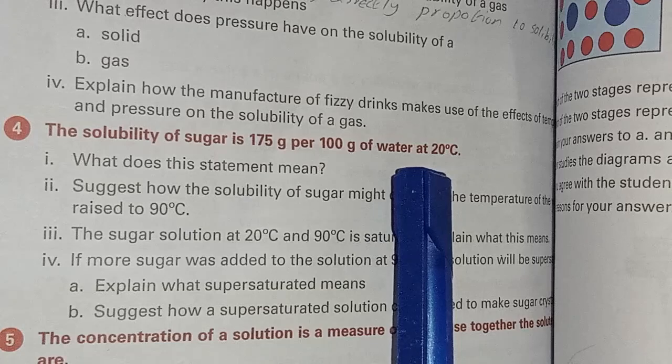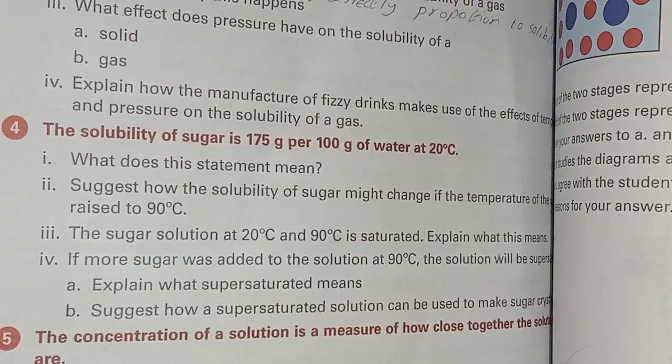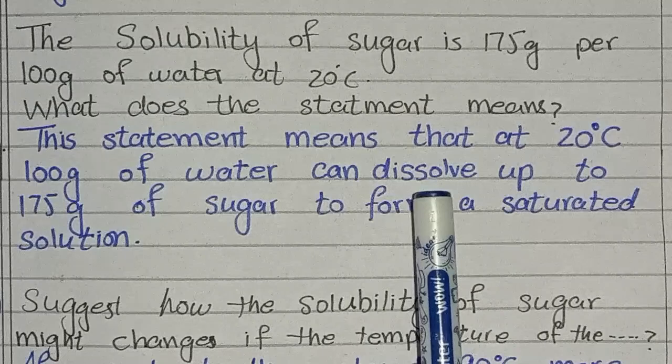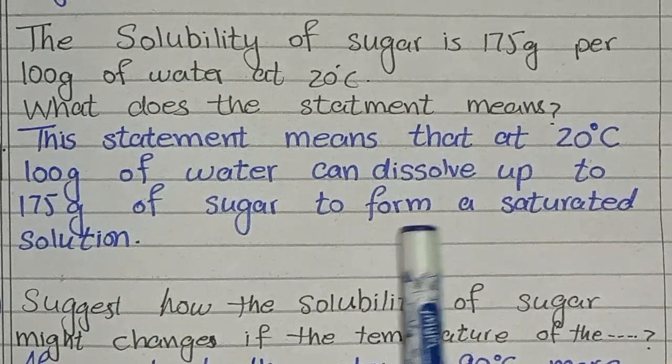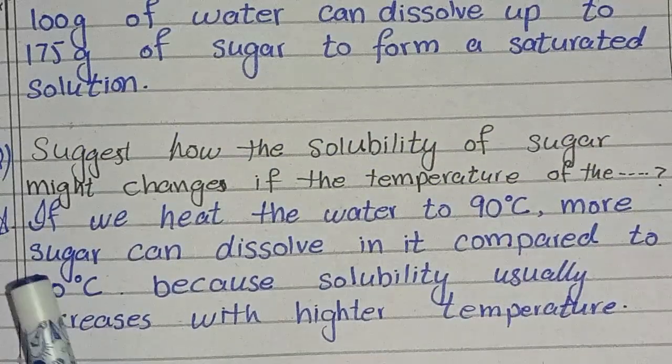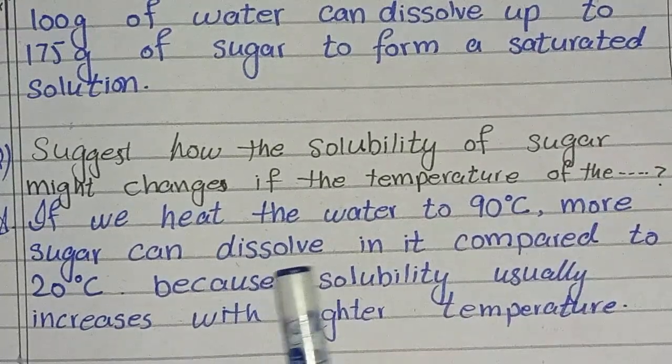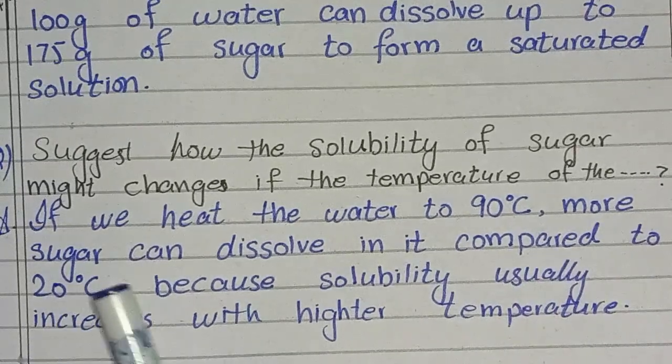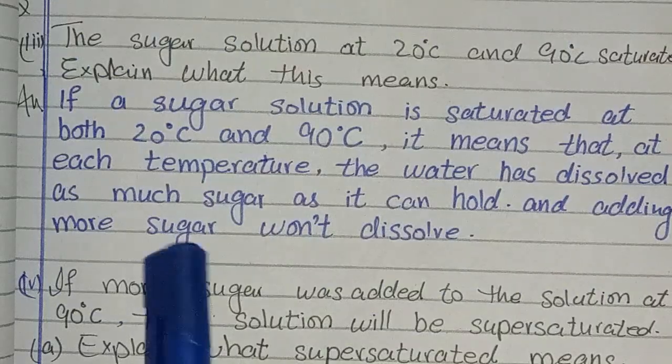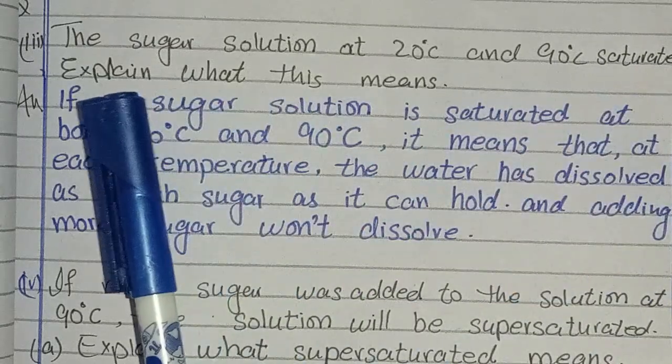Question number 4: The solubility of sugar is 175 gram per 100 gram of water at 20 degrees. What does this statement mean? Answer: the statement means that at 20 degrees, 100 gram of water can dissolve up to 175 gram of sugar to form a saturated solution. Next question: Suggest how the solubility changes at higher temperature. If we heat the water at 90 degrees, more sugar can dissolve in it compared to 20 degrees because solubility usually increases with higher temperature.